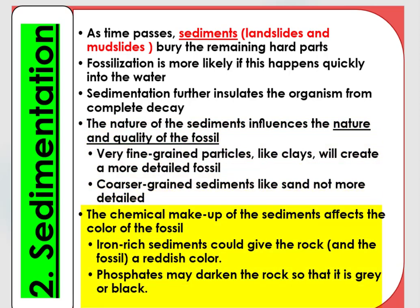The chemical makeup of the sediments affects the color of the fossil. For example, iron-rich sediments could give the rock or fossil a reddish color, whereas phosphates may darken the rock or fossil so that it looks gray or black.